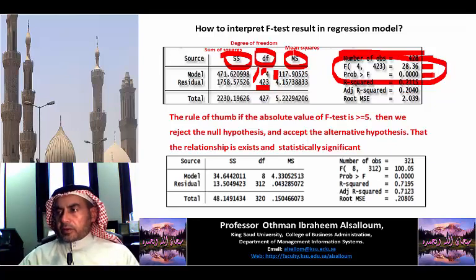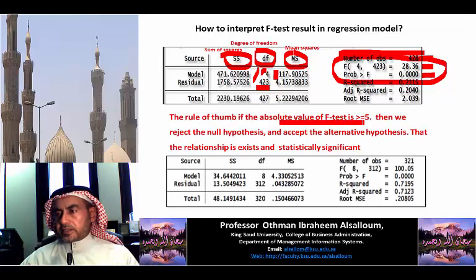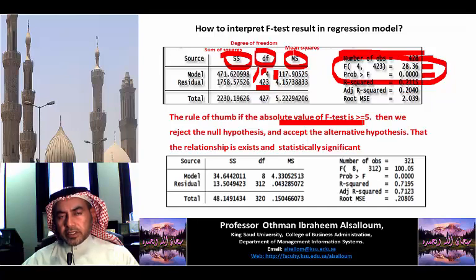The rule of thumb here: whenever the absolute value of the F-test is greater than 5, then a relationship exists and it is significant.